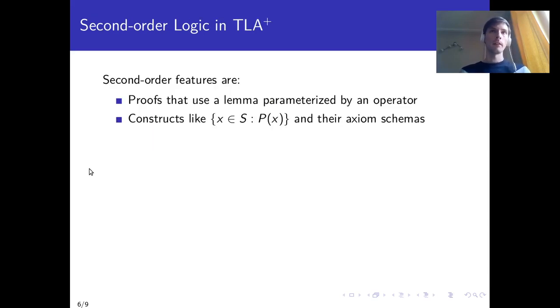Okay, so we can state in general what problems are not going to be handled well by TLAPS. Every time a lemma that is parameterized by an operator is invoked in a proof, and that lemma has to be used, so to be instantiated with an operator, this is a second order problem. So we can't use the first order backend at all for those.